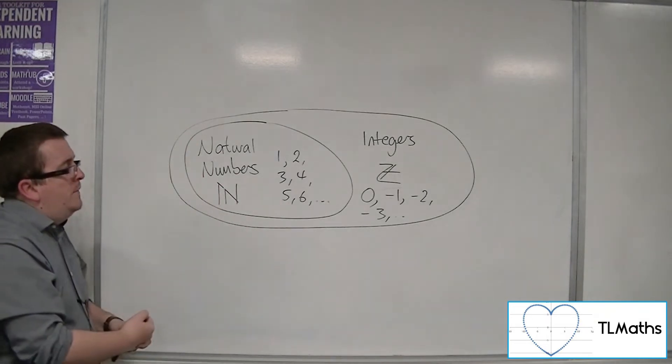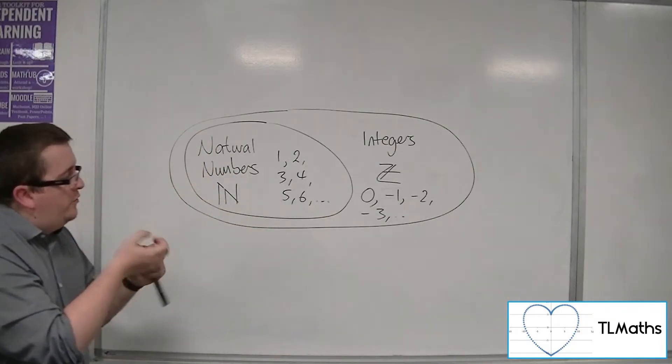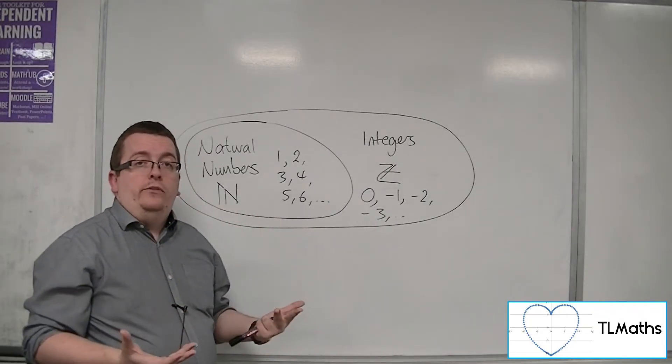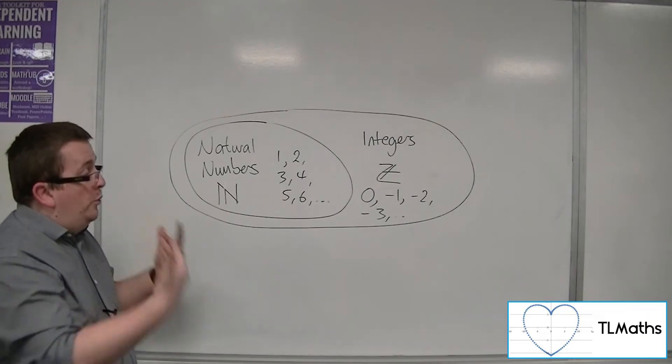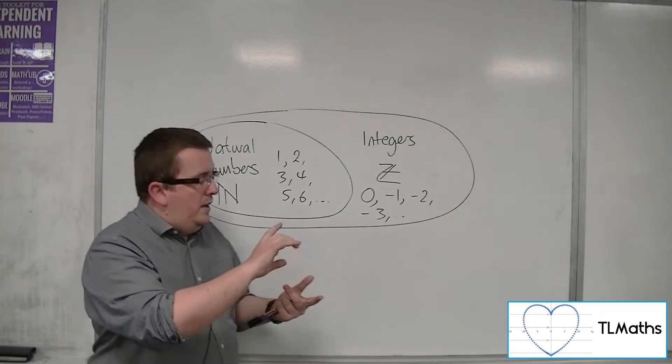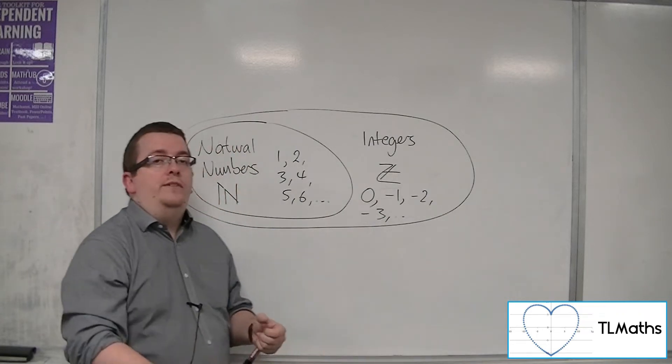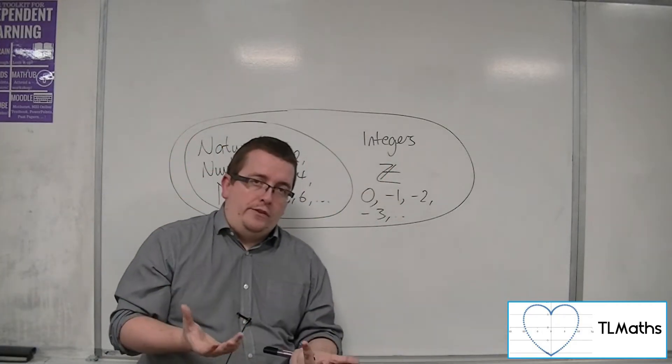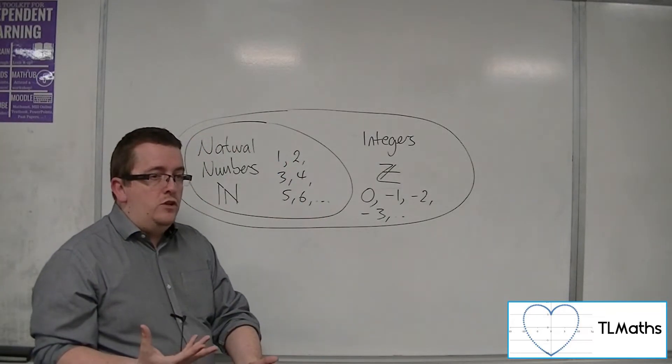So once we're there, we start to think, well, we know that there are numbers between the gaps, between 1 and 2 and 3 and 4. And we usually think of them, oh, they're decimal numbers. Well, that's true. But we could also represent a lot of them as fractions. But seeing as fractions can always be represented as a decimal, not all decimals can be represented as a fraction. The world of fractions is smaller than the world of decimals in general.